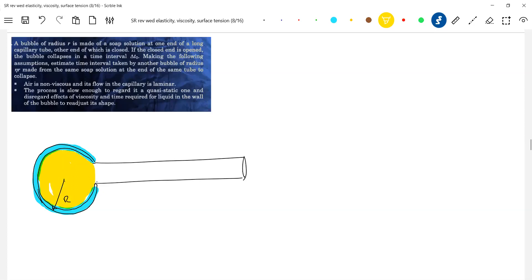This is what initially t goes to zero and this is the tube. T equal to zero. This is soap film. Soap bubble. Outside also, it'll be present.